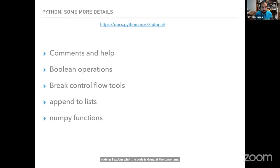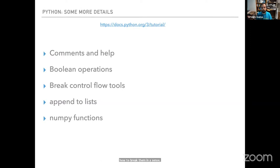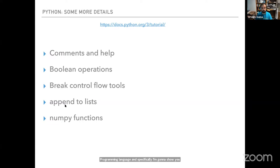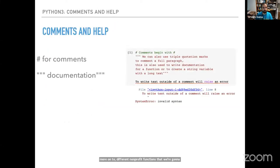Today I'm going to talk about topics related to basic Python operations. First, I'll cover comments and how to get help immediately from within Jupyter or Google Colab. Then I'll talk about boolean operations, control flow tools and how to break them — sometimes we don't want to just follow the for loop or keep a while loop going and there are mechanisms to break the normal control flow. I'll also cover the append function for Python lists, then dive deeper into NumPy functions we'll use for our projects.